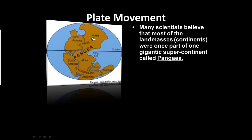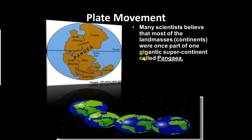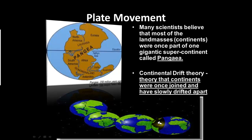Pangea — looking at this graphic, this is what many scientists believe the Earth looked like thousands of years ago. They believe that most of today's continents — North America, Europe, South America, Africa, Antarctica, and Asia — were once part of one gigantic supercontinent called Pangea. Over time, the movement of the plates caused the continents to shift to what we have today, going from one gigantic continent to many continents.